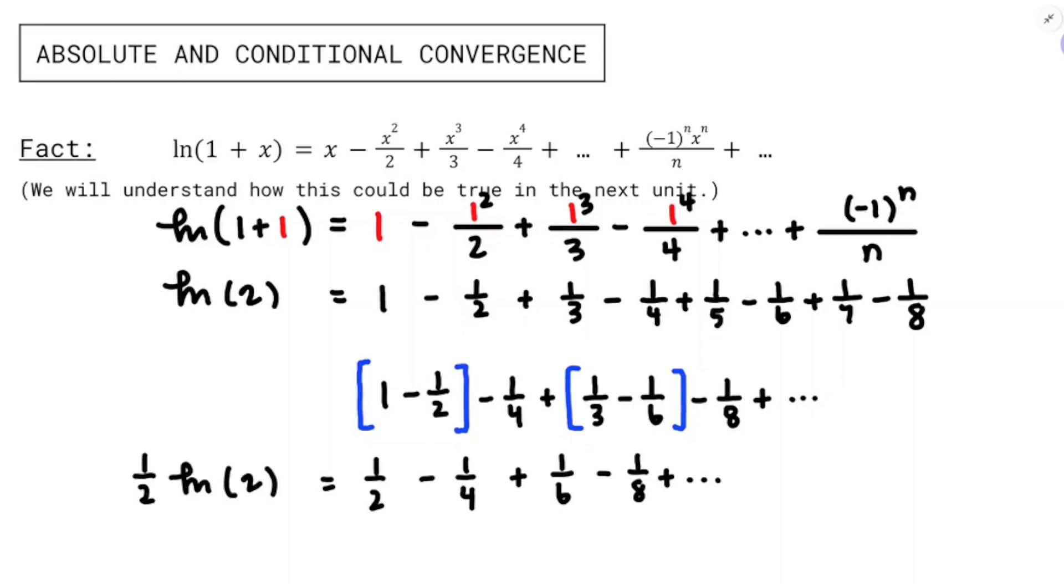It's like, wait a second, what just happened here? It should be the same thing, right? And when I say 3 plus 4 is the same as 4 plus 3, it is. And the commutative property is still valid. That's only for a finite addition.